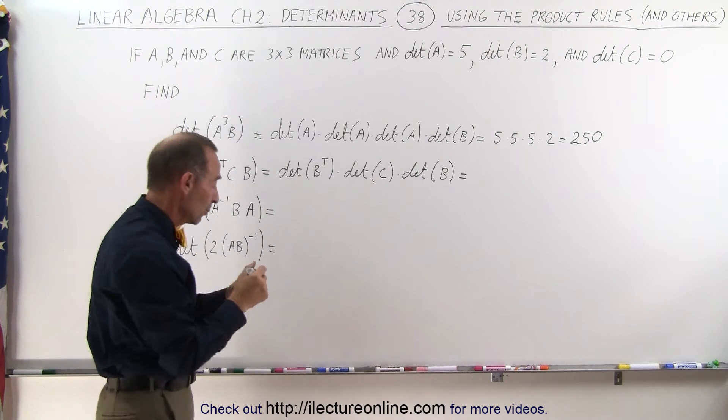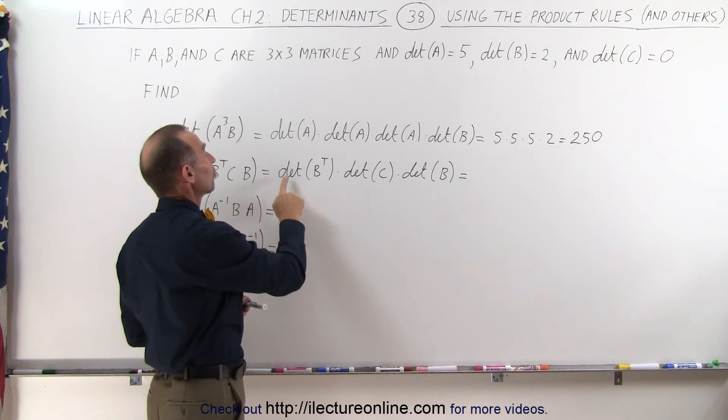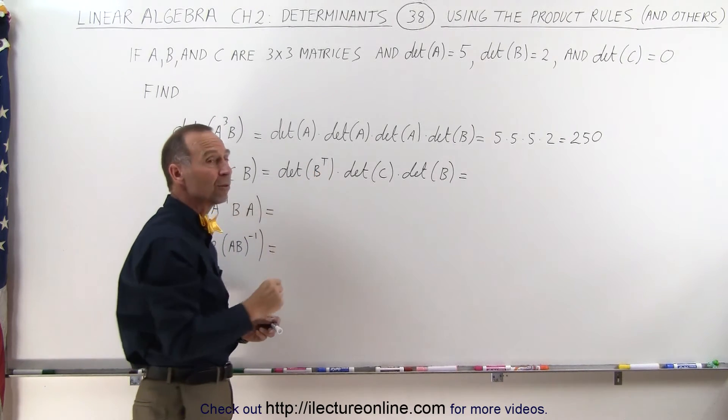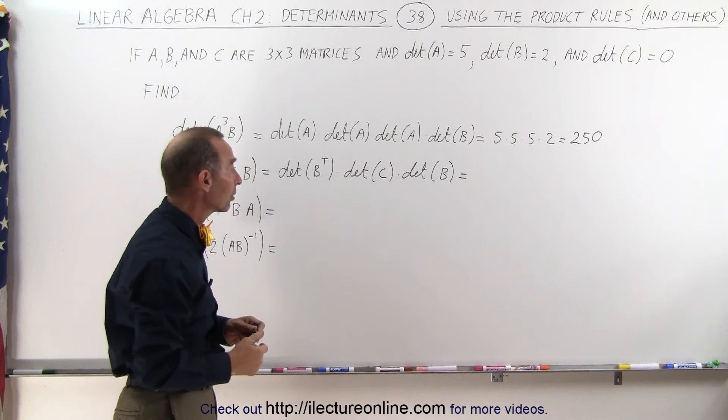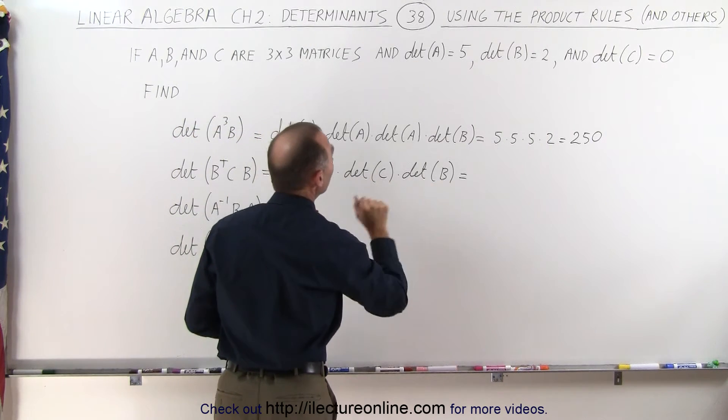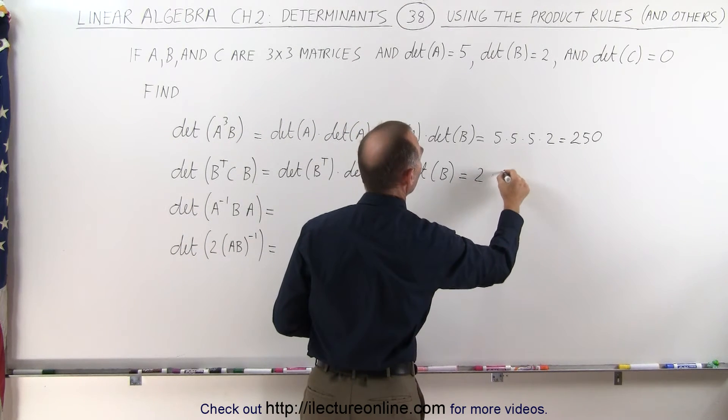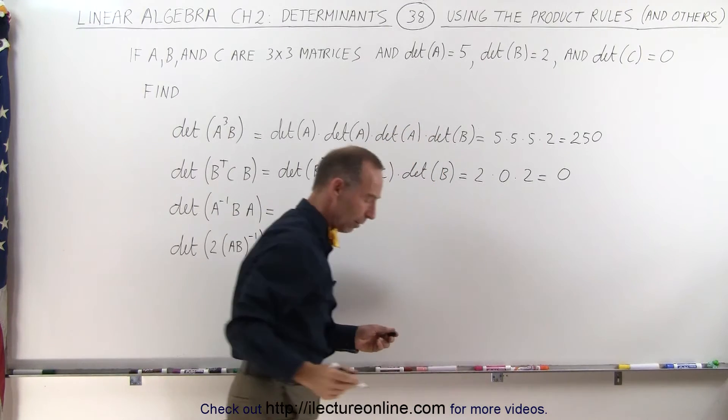But just so we can remember the rules and practice the rules, it turns out that the determinant of the transpose of a matrix is equal to the determinant of the matrix. So therefore, this and this will have the same quantity. The determinant of B is 2, so this becomes 2 times 0 times 2, which is 0.